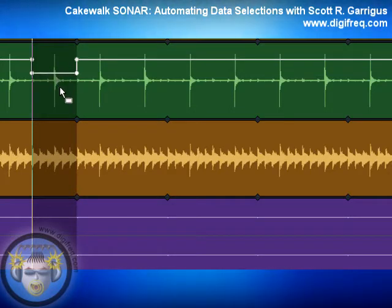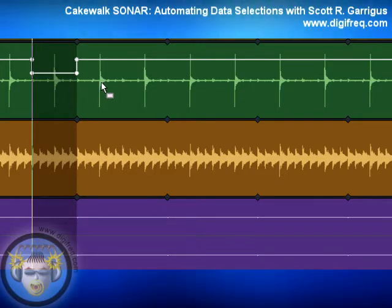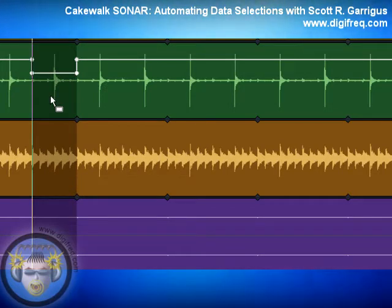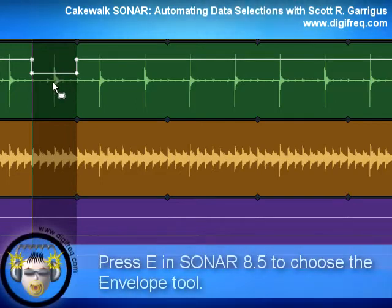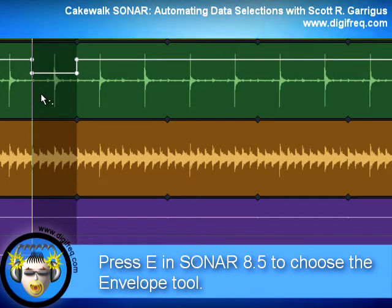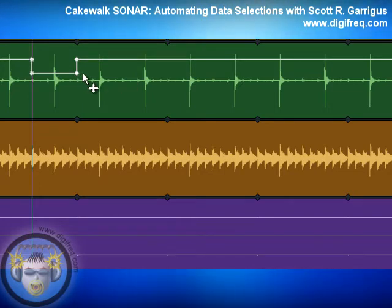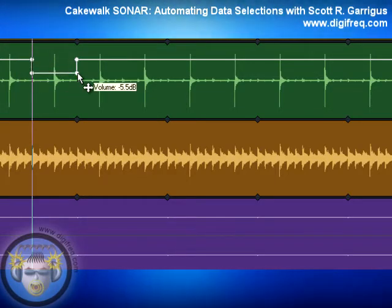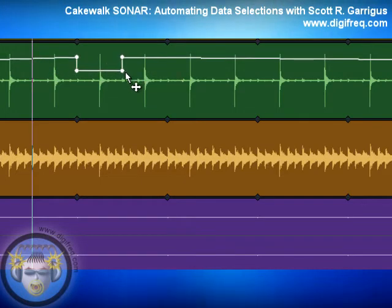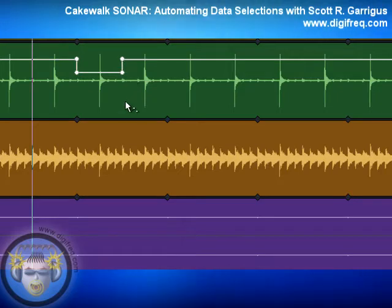Now let's say I wanted to adjust the third snare hit rather than the second. Instead of going through that whole procedure again, I can just switch over to the Envelope tool by pressing E. Then I can click and drag to select all four nodes, grab one of the nodes, and drag — and now the third hit is being automated rather than the second.